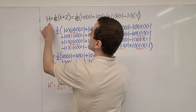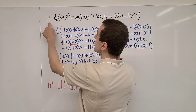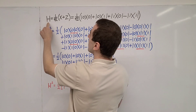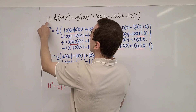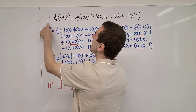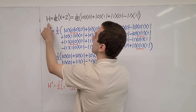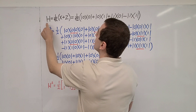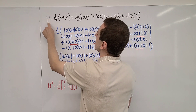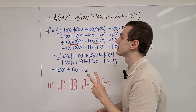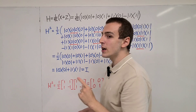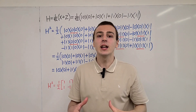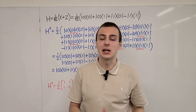This Hadamard gate is Hermitian and it is unitary. If we take the square of this gate, we should get the identity operator. In this video, we're going to show why taking the square gives the identity. We're going to do it in two separate ways: the first way is with Dirac notation, and the second way is with matrix multiplication.